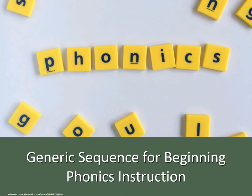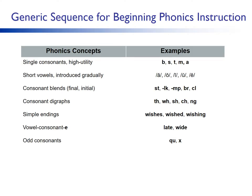The phonics concepts chosen for early instruction have high utility. For example, the letters B, S, D, M, and A are high utility and will easily spell several words — examples are bat, sat, rat, am, as, and at. Low utility spellings would be the letter X as in box and GH as in through.